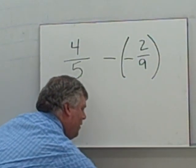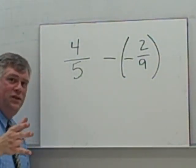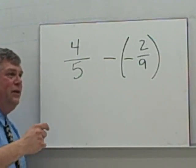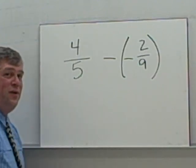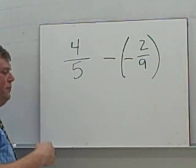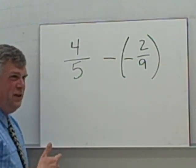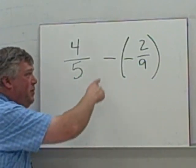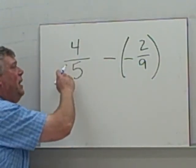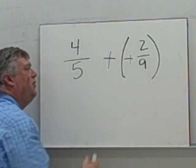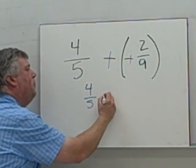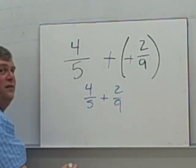Now here, we did just recently learn about integer operations. And we learned that when you have a subtraction problem, you're actually going to do the keep it, change it, change it. Not so much when you've got a single subtraction, but when you've got a double subtraction here, you're going to want to do the keep it, change it, change it on this. So this becomes 4/5 + 2/9.